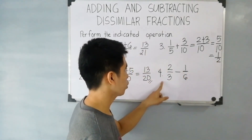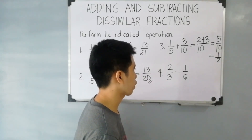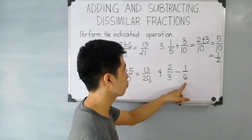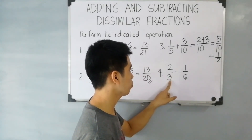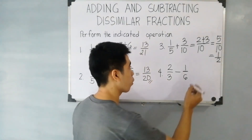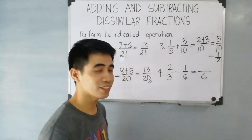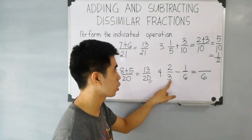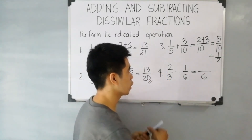For item number 4, 2 over 3 minus 1 over 6. The same process applies as with adding dissimilar fractions — we have to find the LCD since they have different denominators. First step: analyze if 6 is divisible by 3. Yes, 6 is divisible by 3. Therefore, our LCD is the higher denominator, which is 6. Next step: divide the LCD by each denominator. 6 divided by 3 is 2, times 2, that is equal to 4.